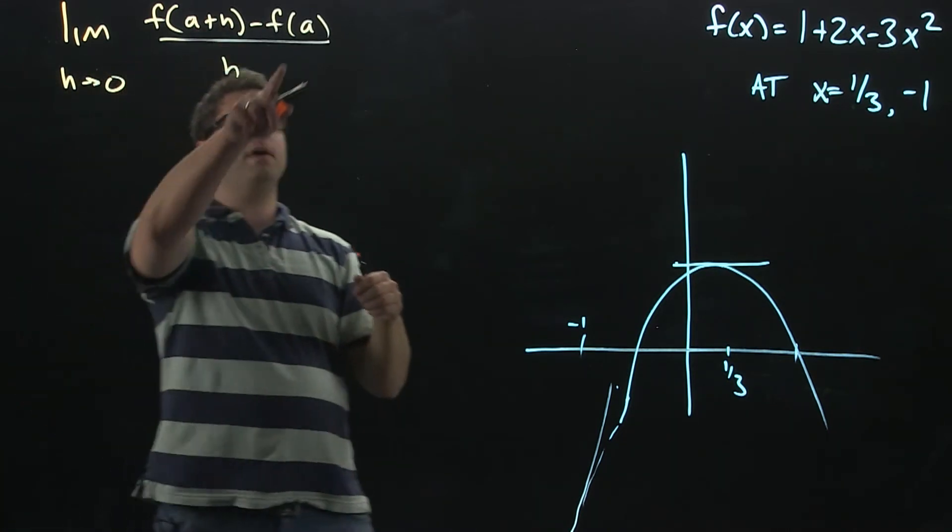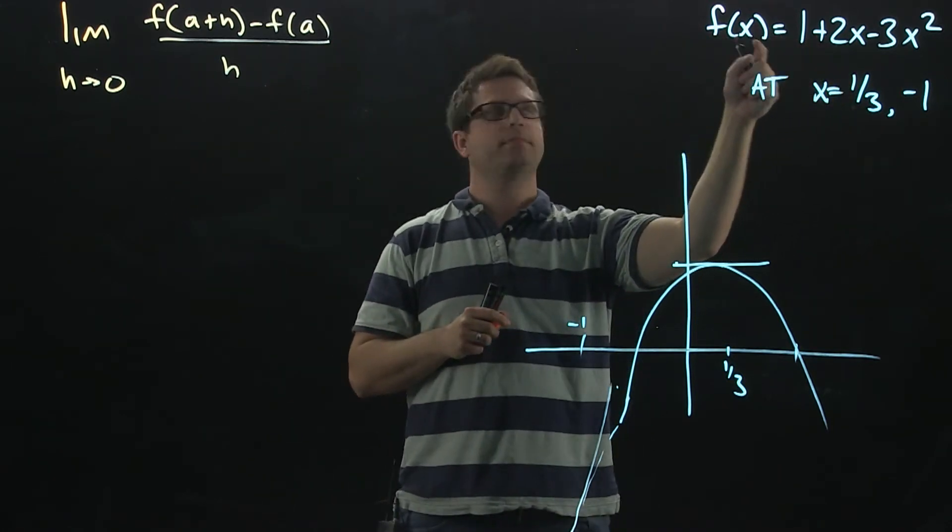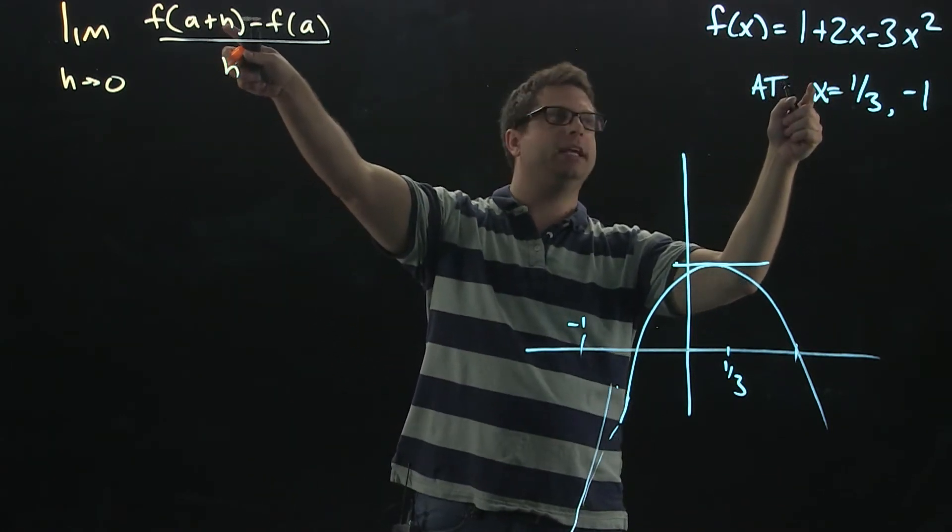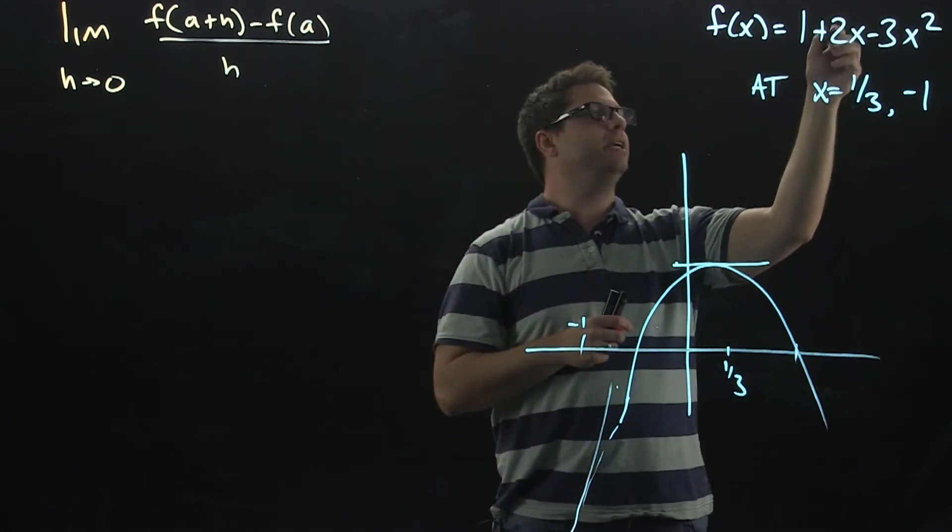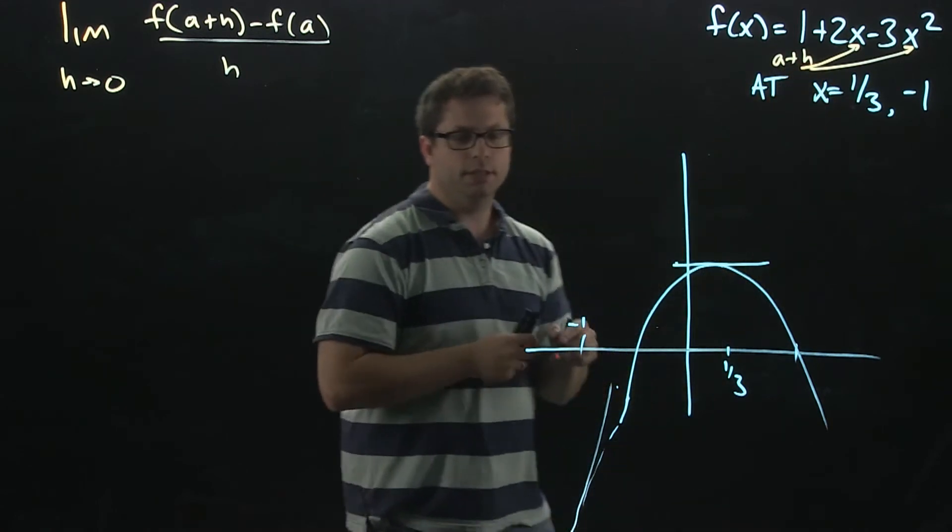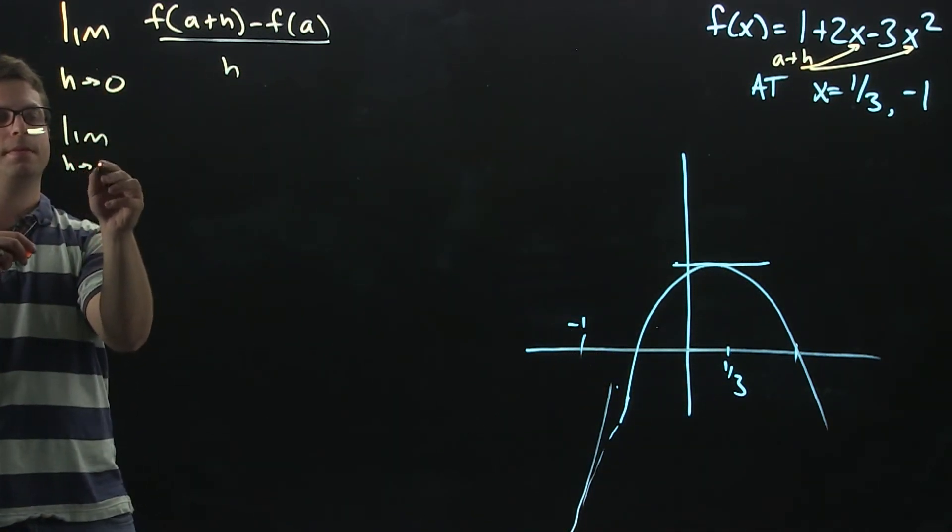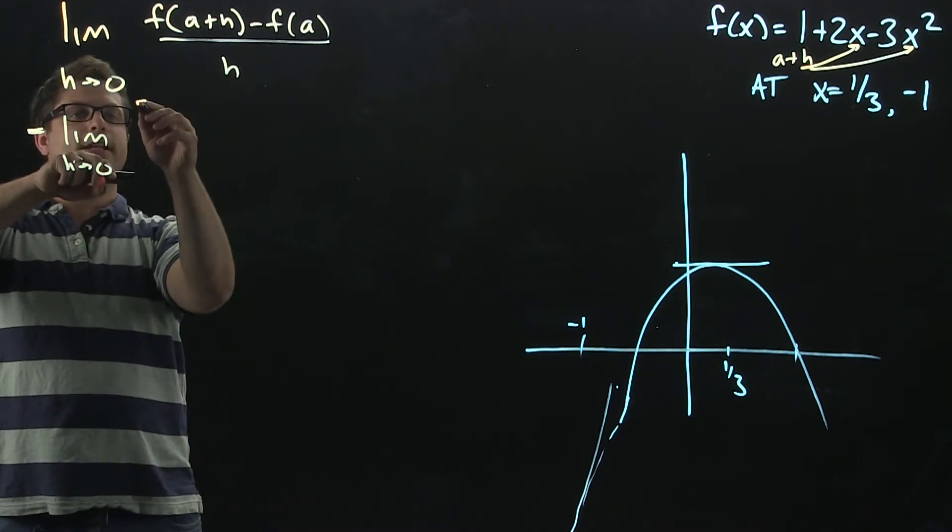Now, I know f(a). f(a) is just going to be the function evaluated at a. Now, what is f(a plus h)? That's going to be replacing these x values right here with a plus h. I'm going to put that in brackets here.